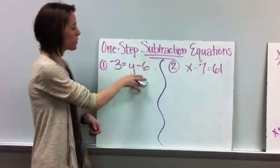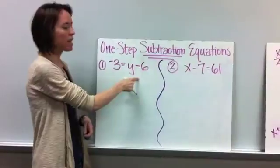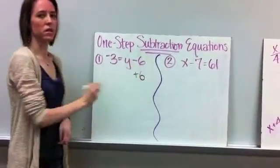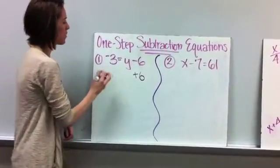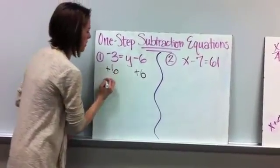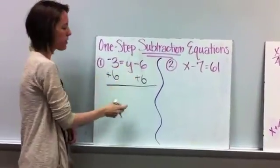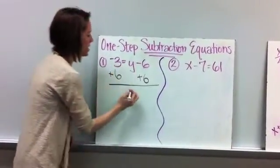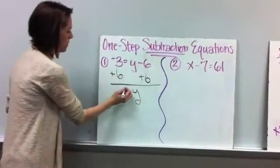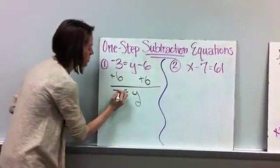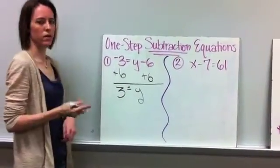So we're going to do inverse operations here. So if we have a negative 6 here, the inverse of that is going to be positive 6. And remember, if we're doing something to one side, we have to do it to the other. Negative 6 plus 6. These cancel each other out and give you 0. Y just carries down. Then you have negative 3 plus 6, which, following our integer rules, is equal to 3.